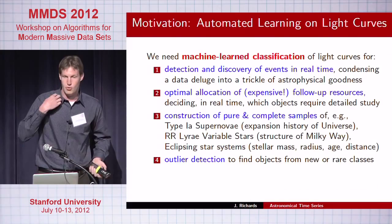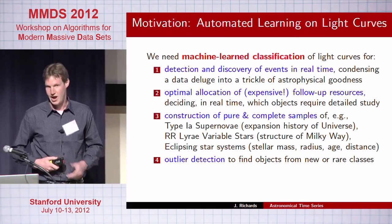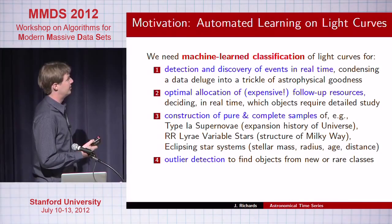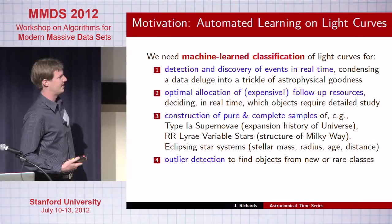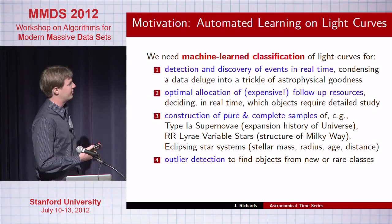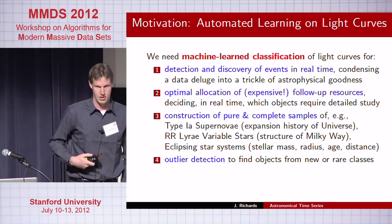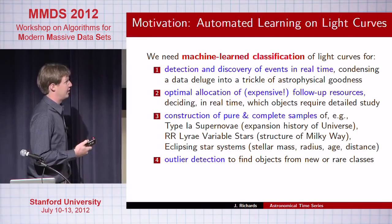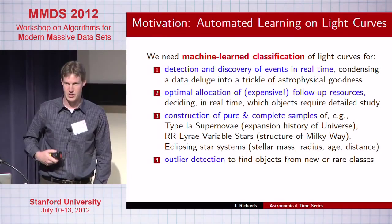We're in the business of classification of these time series. First is detection of events in real time — exploding things that occur and maybe can be seen for a couple of weeks or up to a month, then never return. This relates to allocating expensive follow-up resources to get precise information on these objects. Spectra are extremely expensive to get, especially for fainter objects, so before we use one of the biggest telescopes in the world, we have to be pretty sure it's something of interest.